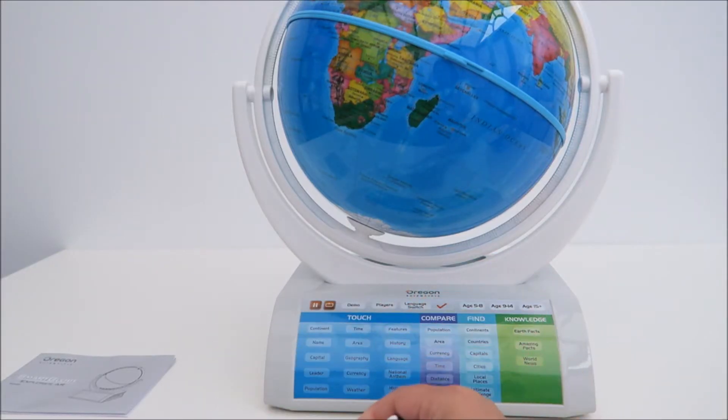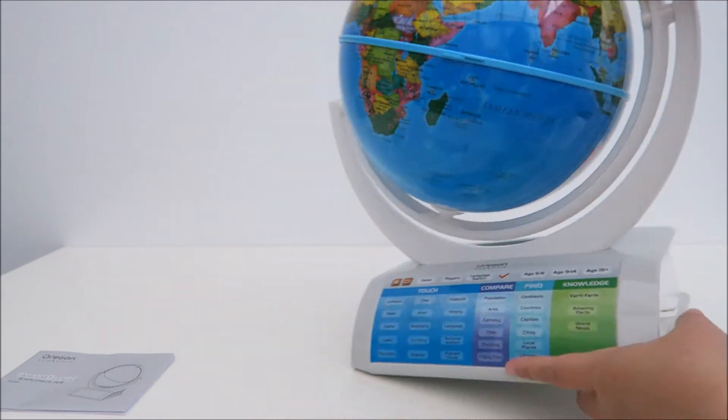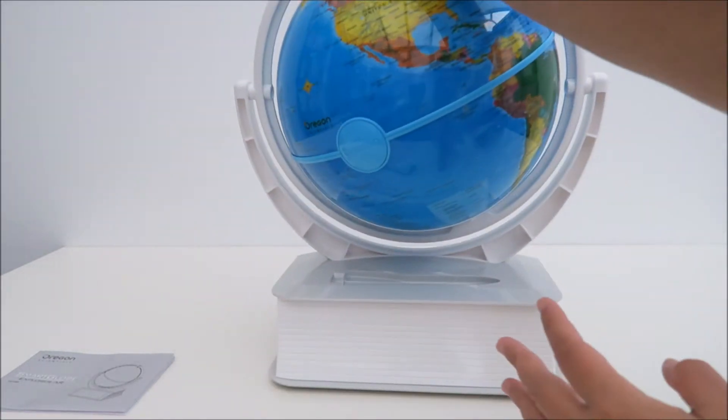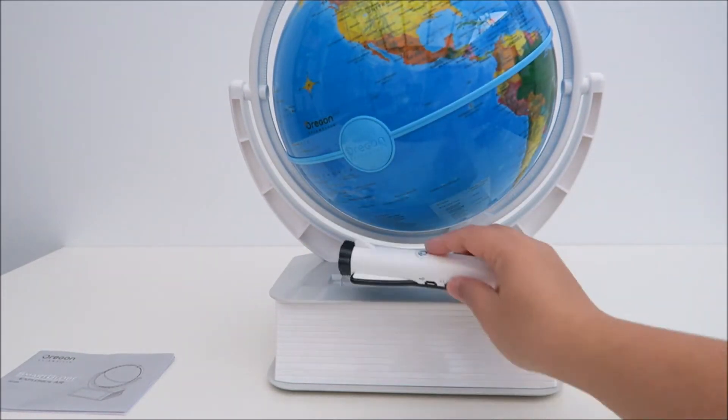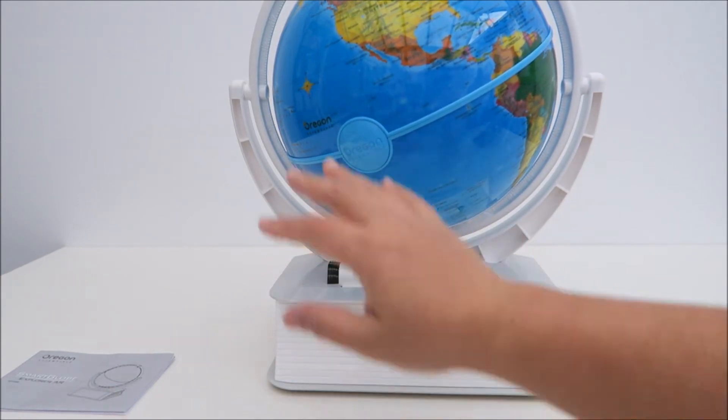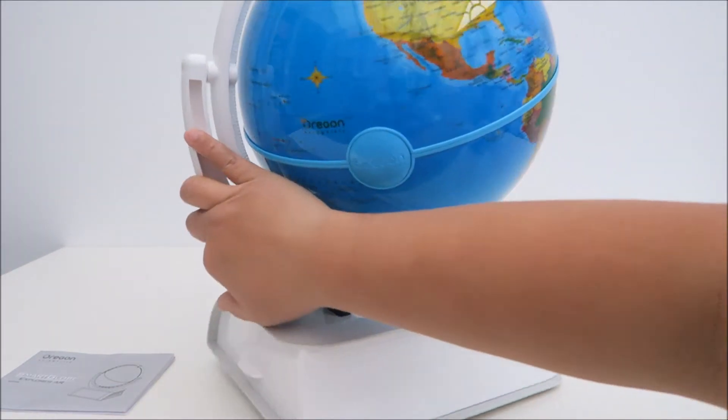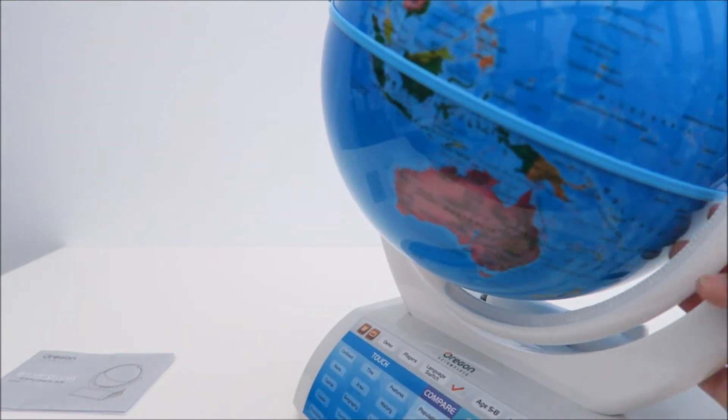And this pen sits very nicely behind the globe. Let's turn the globe around like this and then you can just place it over here. It sits so beautiful behind it and then just hidden away that you did not know it's behind it.